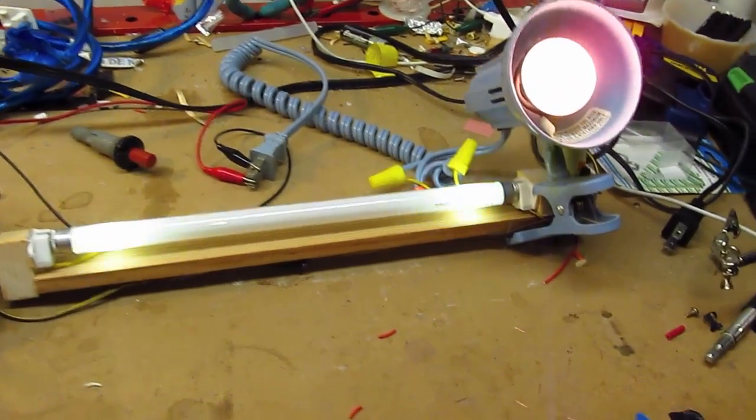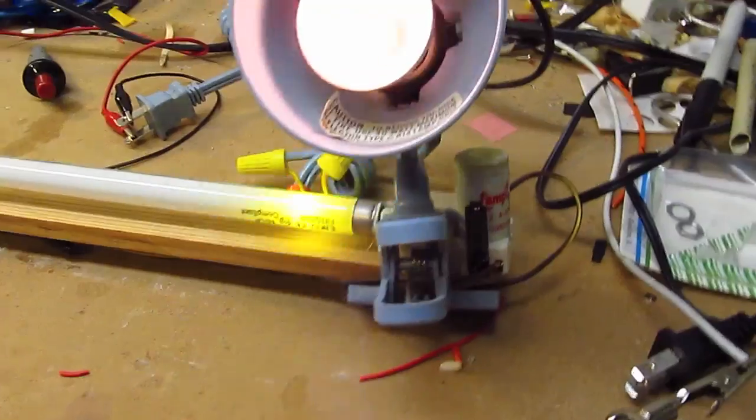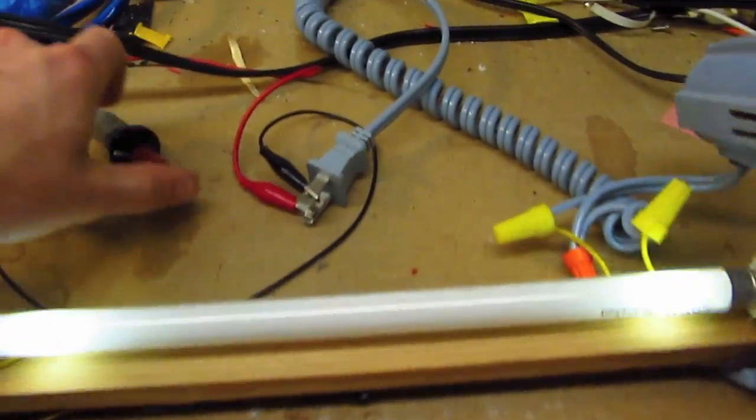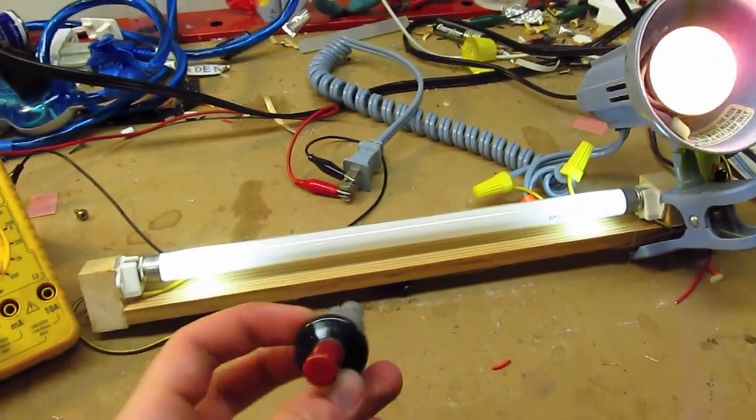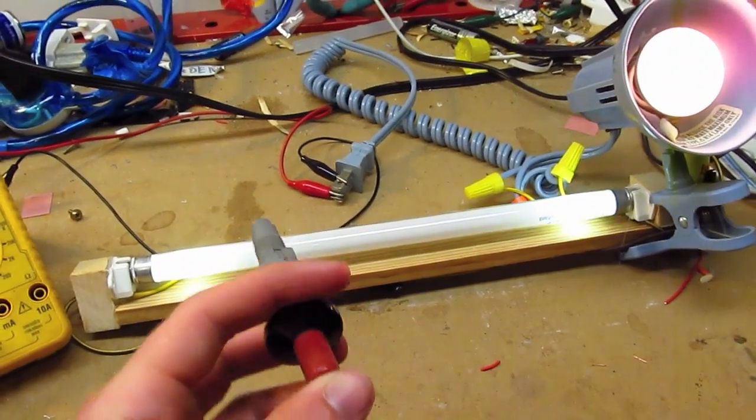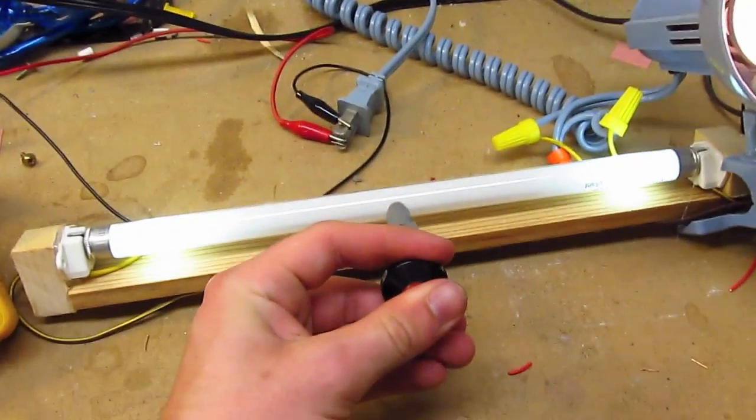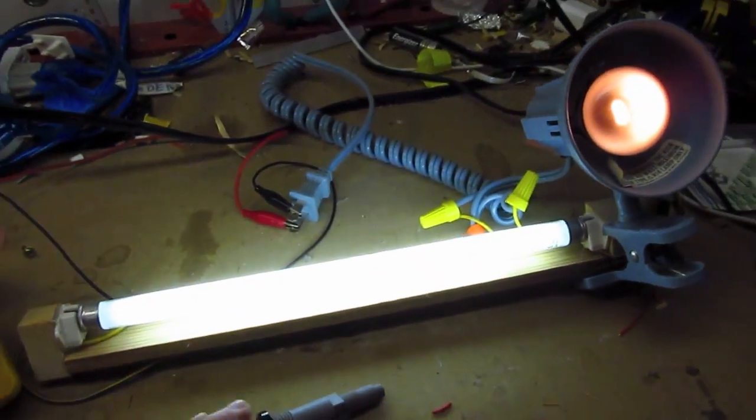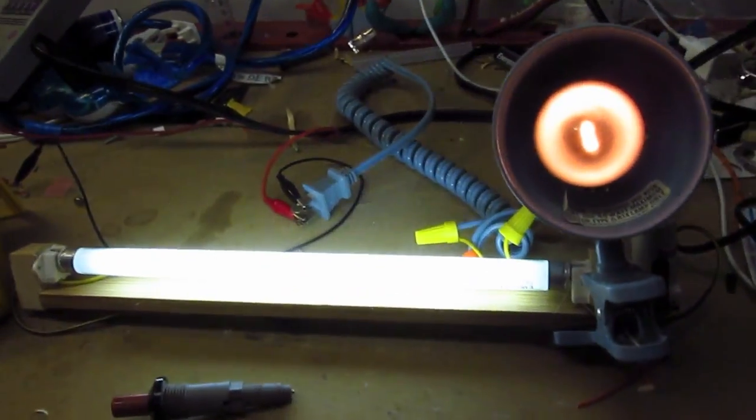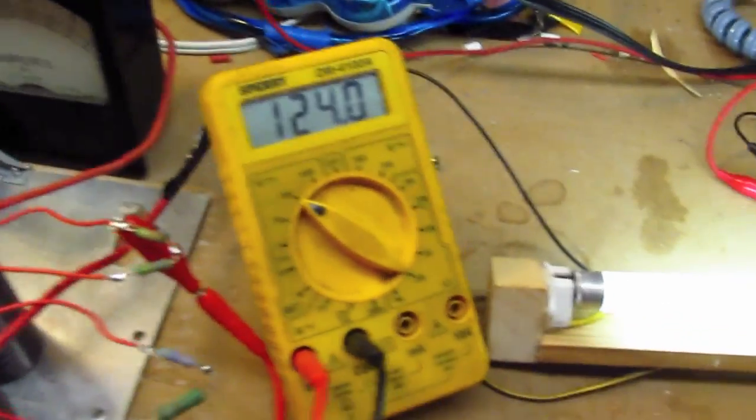However, it cannot actually strike the tube, so it needs a little bit of an extra boost from this little grill igniter. And now the circuit is running normally.